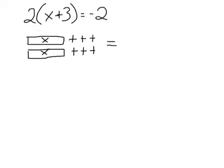You can see that this part of the equation is being modeled by what I've drawn here because I have 2 groups of X plus 3. Overall this is basically the same as 2X plus 6, if that helps you out. We'll see how that applies later when we're solving symbolically. Now we just have to draw 2 negatives on the other side.